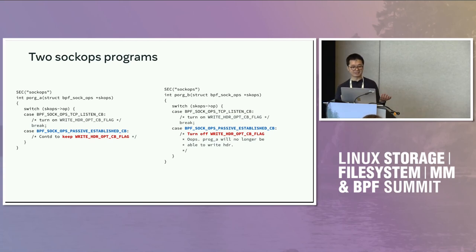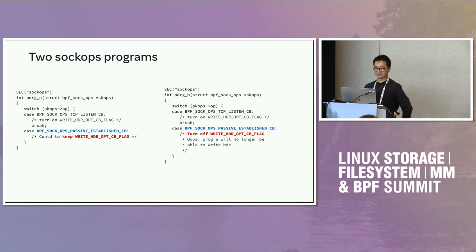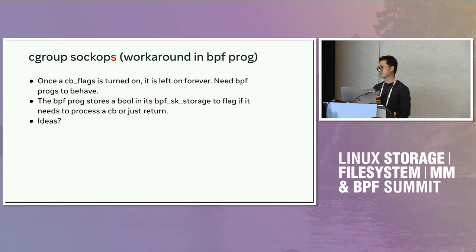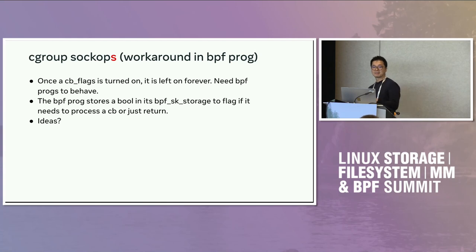So the problem: program A runs first and keeps the flag on. But program B runs later and turns it off. Then program A will never get the callback either. We talked about this with both teams that added this second BPF program, and concluded that once a flag is on, we can never turn it off — because we don't know whether other BPF programs in front of it are still interested in it.